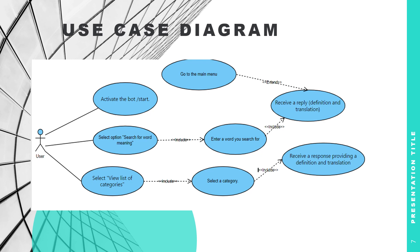The system works as a single-user application. It can be used on any device with an installed web version of the Telegram messenger. The input data is the search word selected or entered by the user, and the output data is information on the definition of a certain word. The diagram on the slide presents possible user interactions with the IT Slang Analysis information system, showing use cases such as: activate the bot to start, go to the main menu, select options, search for word meaning, enter a word, and receive a reply — in our case, definitions and translations.